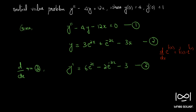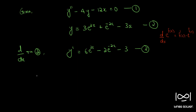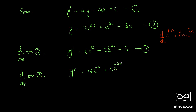We need y double dash. So, taking d/dx on equation 3, we get y'' = 12e^(2x) + 4e^(-2x). This is equation 4.